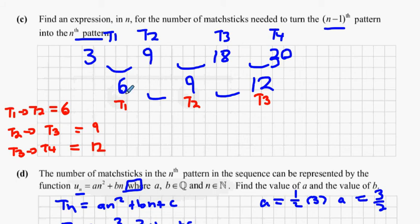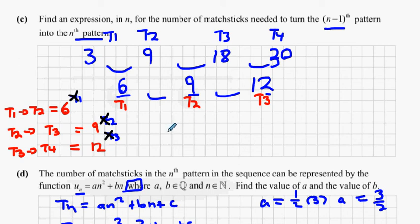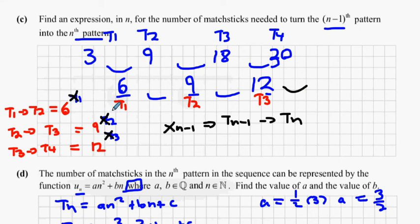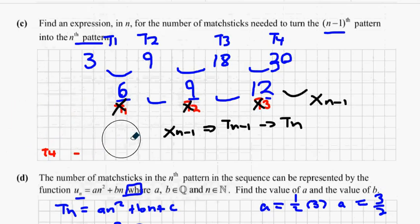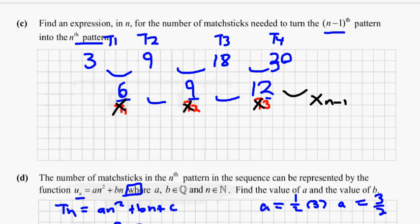If we make this into a new sequence — calling them x1, x2, x3 — then x1 turns t1 into t2, x2 turns t2 into t3, x3 turns t3 into t4. So xn minus 1 would turn t(n−1) into tn. We want to find what xn minus 1 is, so we need to find the formula for this sequence.